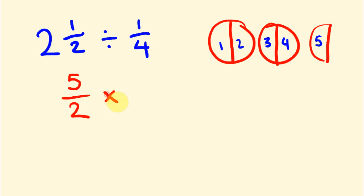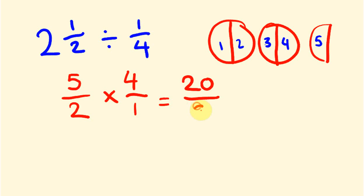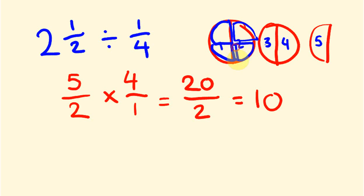Now I flip the quarter: this becomes 4 over 1. So 5 times 4 is 20, over 2 times 1 which is 2. Twenty divided by 2 is 10. That makes sense — if you imagine 2 and a half divided into quarters, you can count 1, 2, 3, 4, 5, 6, 7, 8, 9, 10 quarters. So there are 10 lots of a quarter in 2 and a half.